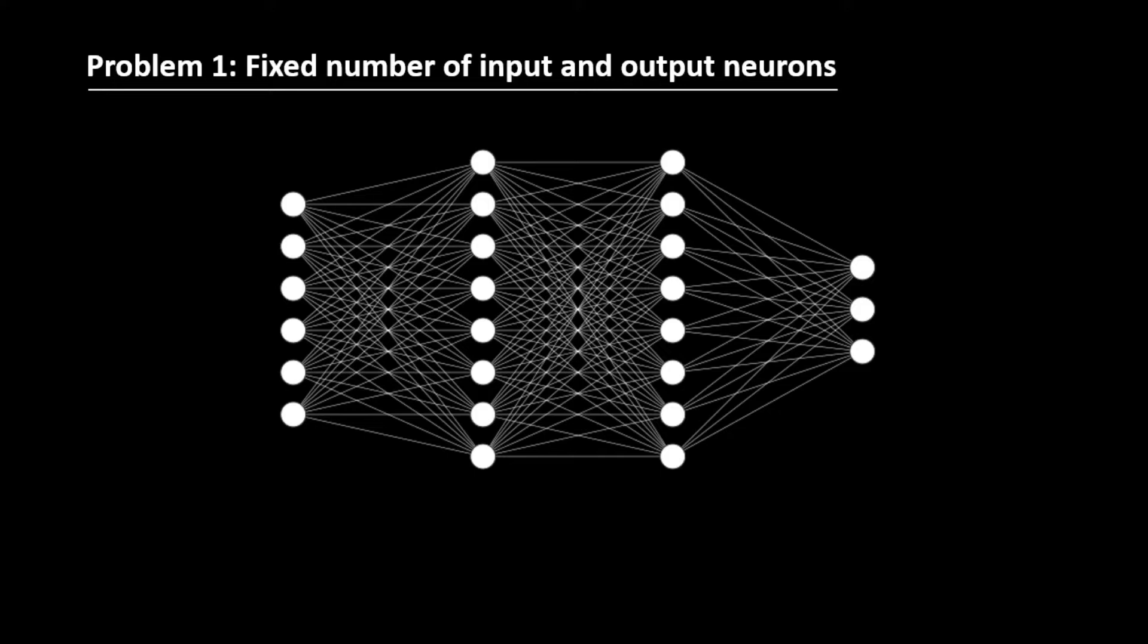Now, let us first see why do we need Recurrent Neural Network and why can't we just use the simple Artificial Neural Network for these tasks? Let's say we want to build a language translation model whose job is to convert an English sentence into a Spanish sentence.